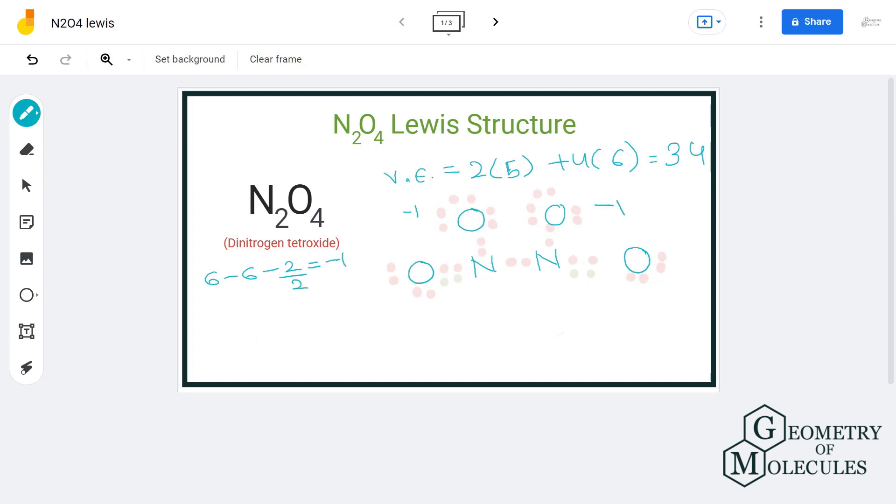For this oxygen, we have six valence electrons minus four non-bonding electrons minus two bonding electrons divided by two, that will give us a formal charge of zero. For nitrogen, we have five valence electrons minus zero non-bonding electrons minus eight bonding electrons divided by two, that will give us a formal charge of plus one.